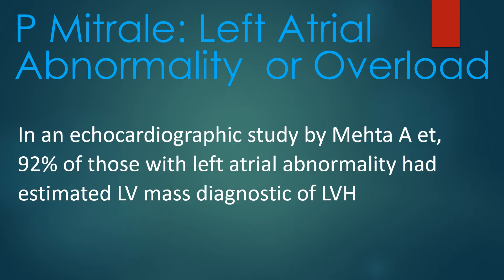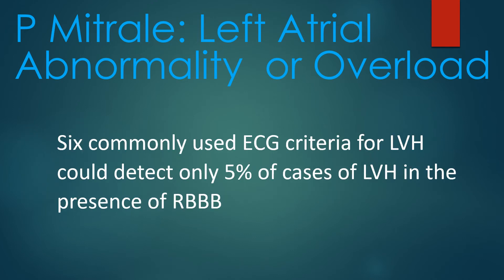In an echocardiographic study by Mehta and associates, 92% of those with left atrial abnormality had estimated left ventricular mass diagnostic of left ventricular hypertrophy. Six commonly used ECG criteria for left ventricular hypertrophy could detect only 5% of cases in the presence of right bundle branch block.